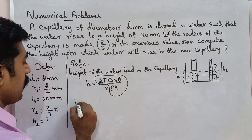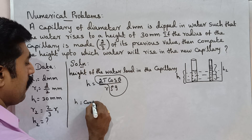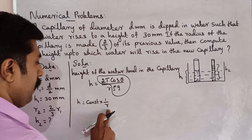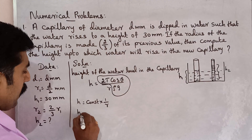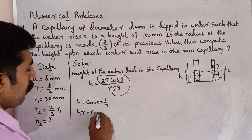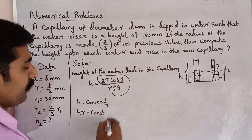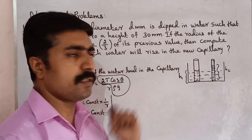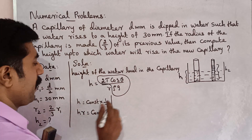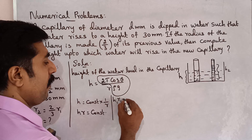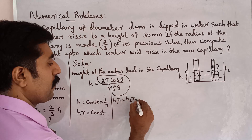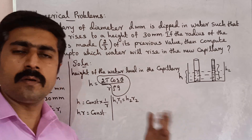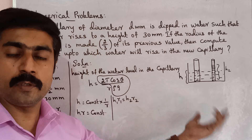So h is equal to constant × (1/r). Here we can see h·r = constant. So this will be simple: h1·r1 = h2·r2 = constant.